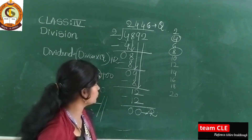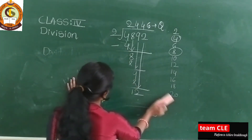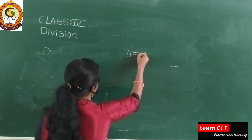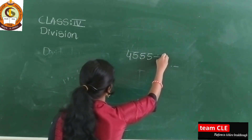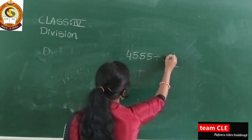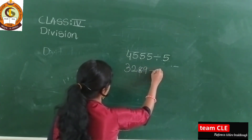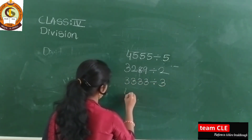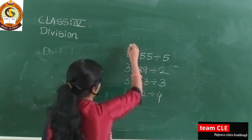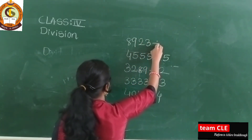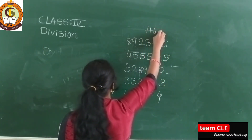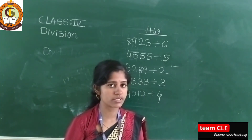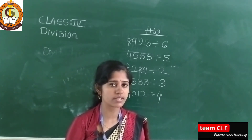I will give some examples as homework. In your practice time, solve: 3289 divided by 2, 3333 divided by 3, 4012 divided by 4, and 800923 divided by 6. Do the homework, verify your answers, and send it to my WhatsApp number. I will discuss verification further in the next class. I hope this class was clear to you. Thank you.